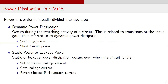Power dissipation in CMOS circuits can be classified into two main categories: dynamic power dissipation and static power dissipation. Dynamic power dissipation occurs during the switching activity of a circuit and can be divided into two main components: switching power and short circuit power. Both of these sources are related to the transition at the input gate and for that reason are usually referred to as dynamic power dissipation.